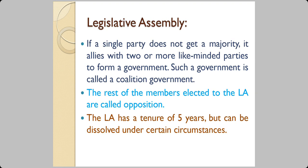Sometimes a single party does not get a majority, so it joins hands with two or more like-minded parties to form a government — such a government is known as a coalition government. The rest of the members elected to the Legislative Assembly are called the opposition. The Legislative Assembly has a tenure of five years, but it can be dissolved earlier if circumstances are not right.